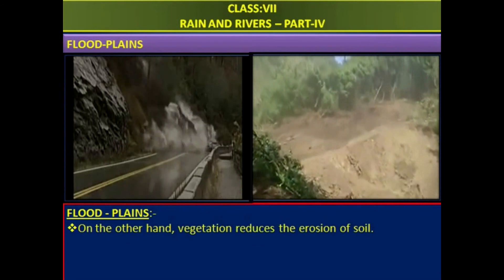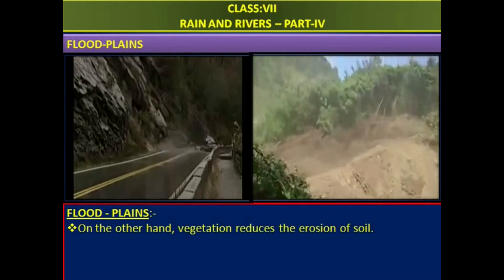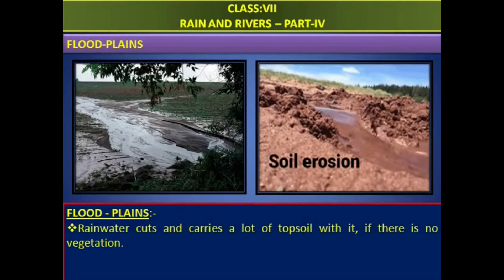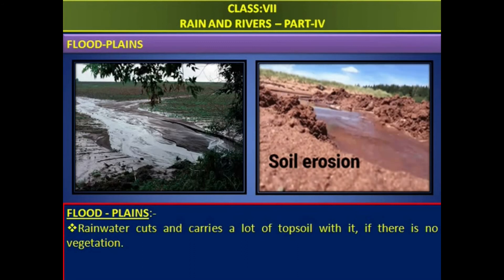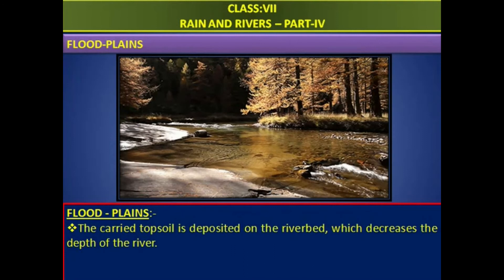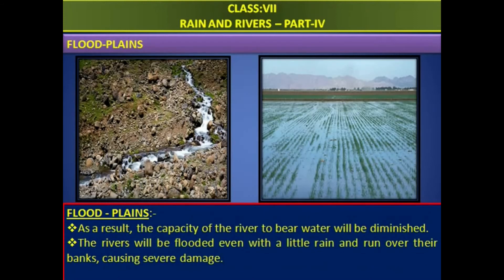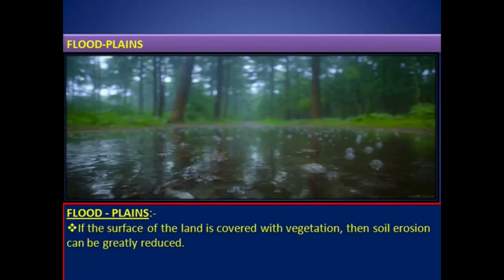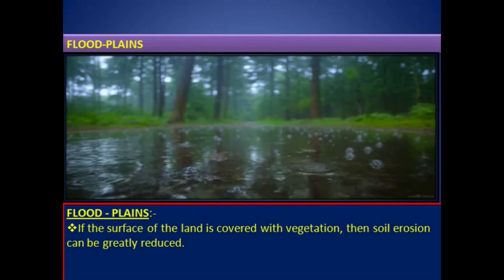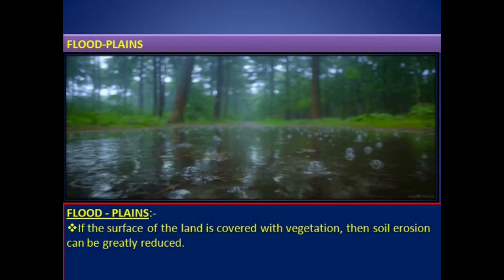On the other hand, vegetation reduces the erosion of soil. If there is no vegetation, when rain falls it cuts and carries a lot of topsoil with it. The carried topsoil is deposited on the riverbed, which increases the depth of the river. As a result, the capacity of the river to bear water will be diminished. The rivers will be flooded even with a little rain and run over their banks, causing severe damage. If the surface of the land is covered with vegetation, then soil erosion can be greatly reduced.